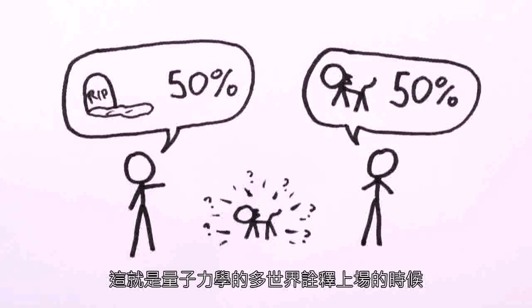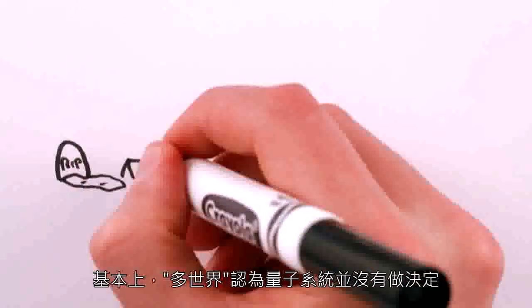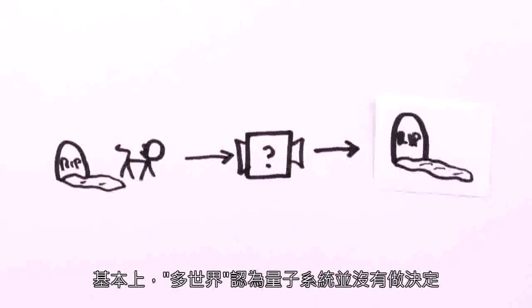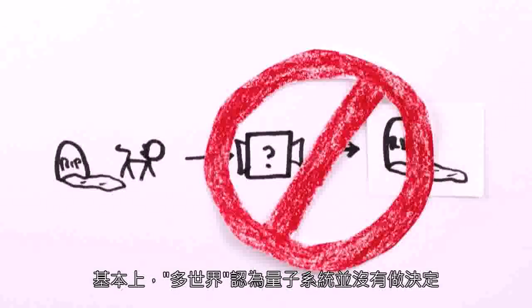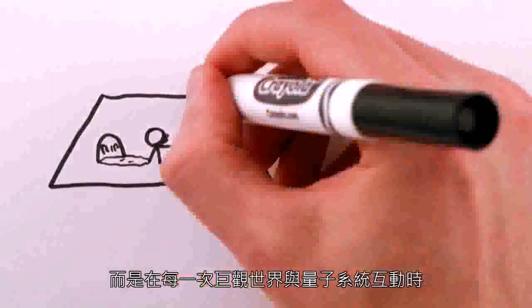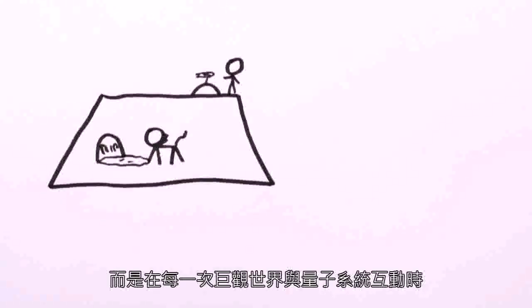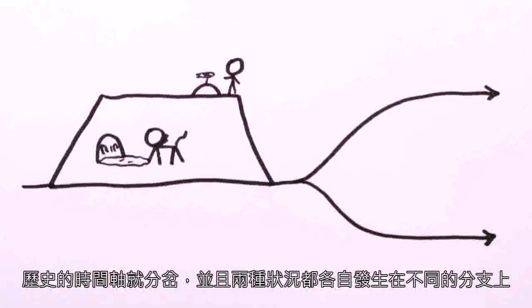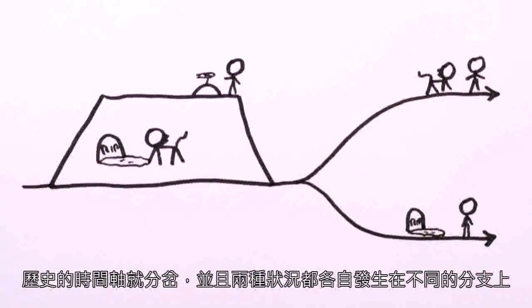That's where the many-worlds picture of quantum mechanics comes in. Basically, many-worlds proposes the idea that the quantum system doesn't actually decide. Rather, that at every junction where large everyday stuff interacts with the quantum system, the timeline of history splits and both possibilities happen on different alternate branches.